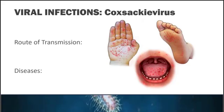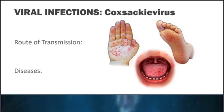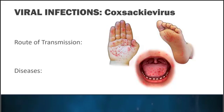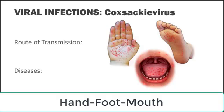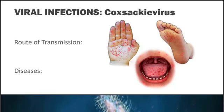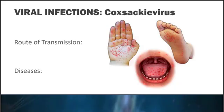Coxsackievirus is transmitted through fecal-oral contamination, saliva, or respiratory droplets. It is the cause of herpangina, hand foot mouth disease, and acute lymphonodular pharyngitis. The most common of these is hand foot mouth disease, which occurs in epidemics in kids under five. The lesions usually resolve in two weeks. This is important to remember because your kids are likely to have this at some point — it's recognizable by its characteristic outbreak on the hands, feet, and mouth. When lesions are limited to those three regions, we can narrow that down pretty easily.